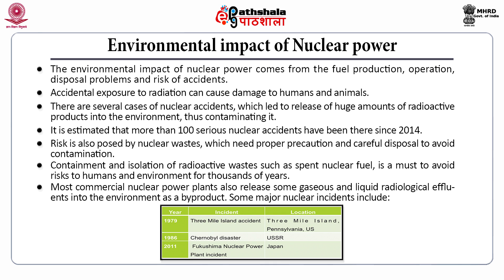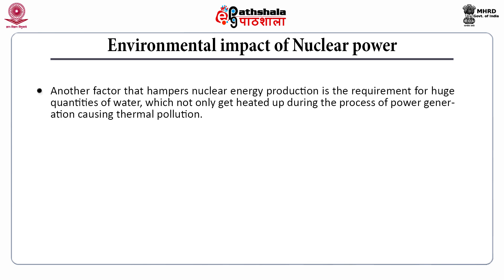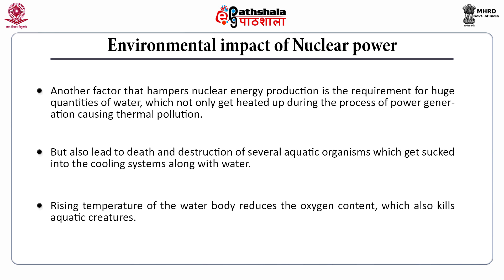Some major nuclear incidents are given in this table: the Three Mile Island Accident, the Chernobyl Disaster, and the Fukushima Nuclear Power Plant Disaster, which occurred in 2011 in Japan. Another factor that hampers nuclear energy production is the requirement for huge quantities of water, which not only gets heated up during the process of power generation, causing thermal pollution, but also leads to death and destruction of several aquatic organisms sucked into the cooling system along with water. Rising temperature of the water body reduces oxygen content, which also kills aquatic animals.